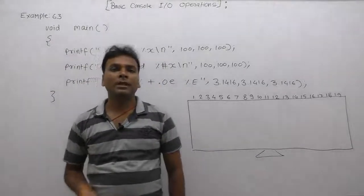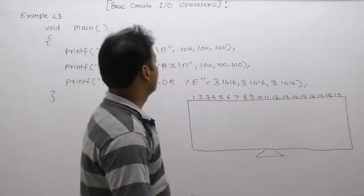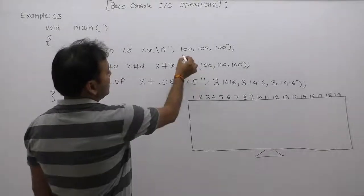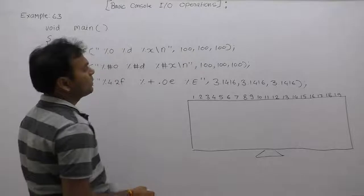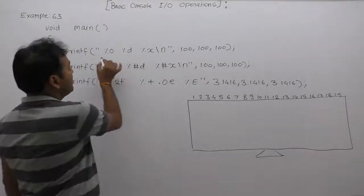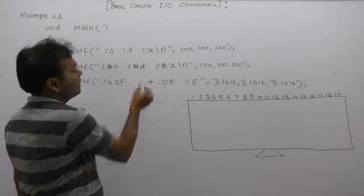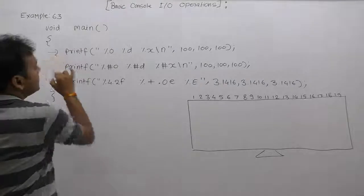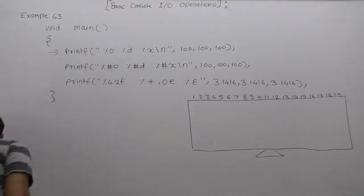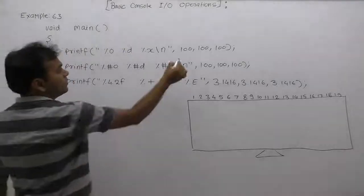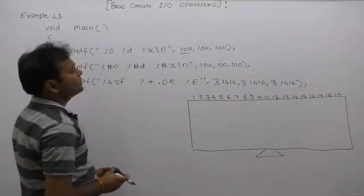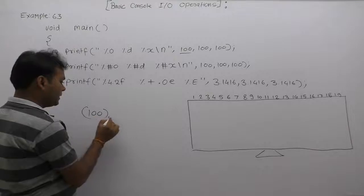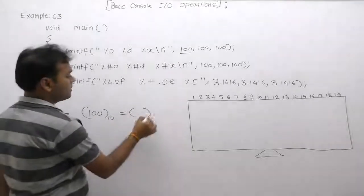In this example, we are supplying different types of integer numbers — always 100 — but we want to display that value in the form of different number systems: first octal, then decimal, and hexadecimal. Whenever this printf function is executed, in place of the format specifier, the equivalent value of 100 is substituted. By default, 100 is in base 10, but we want to display the same value in base 8.